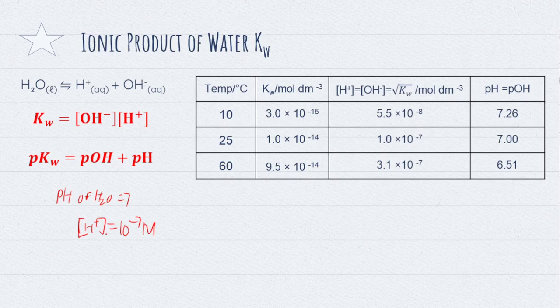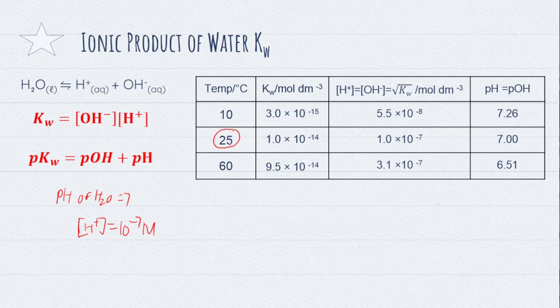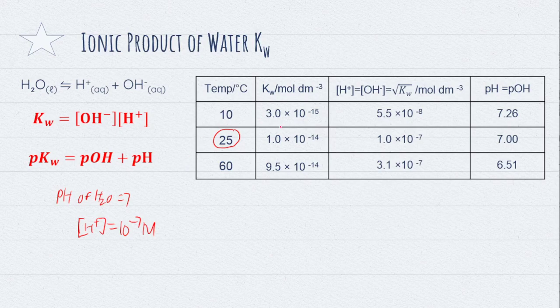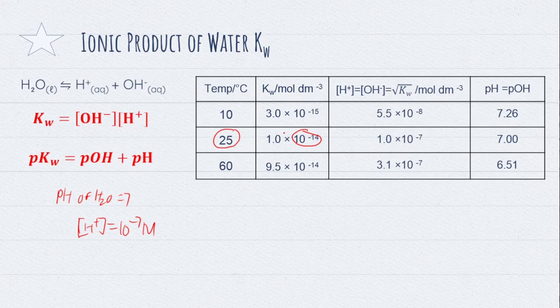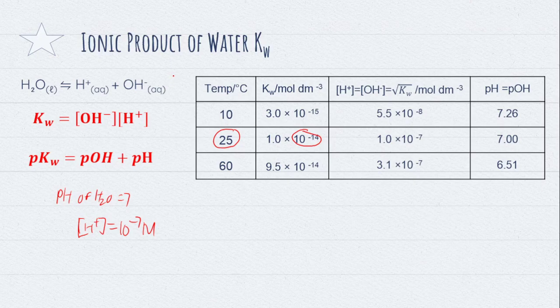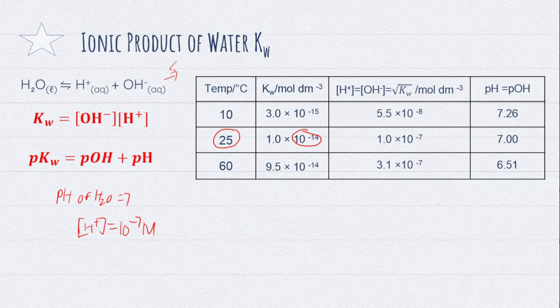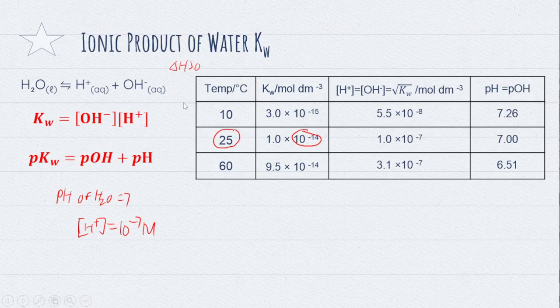So, first thing to take note of is pH of H2O is 7 only at our favorite temperature, room temperature, 25 degrees Celsius, thereby making Kw a very nice number, 10 power minus 14 or 1 times 10 power minus 14. You notice, as the temperature decreases, the concentration of H+ decreases. And from here you can probably tell that this forward reaction is actually endothermic. You decrease temperature, equilibrium favors the backwards reaction, so endothermic reaction.